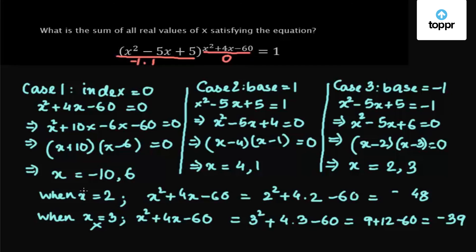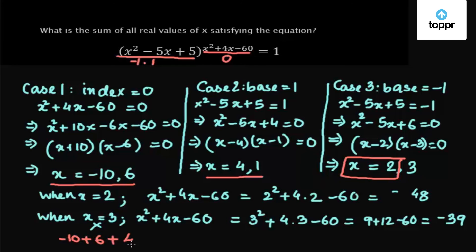The valid real values of x are: x = -10, x = 6, x = 4, x = 1, and x = 2. Adding all these values: -10 + 6 + 4 + 1 + 2 = 3. So the sum of all real values satisfying the equation is 3.